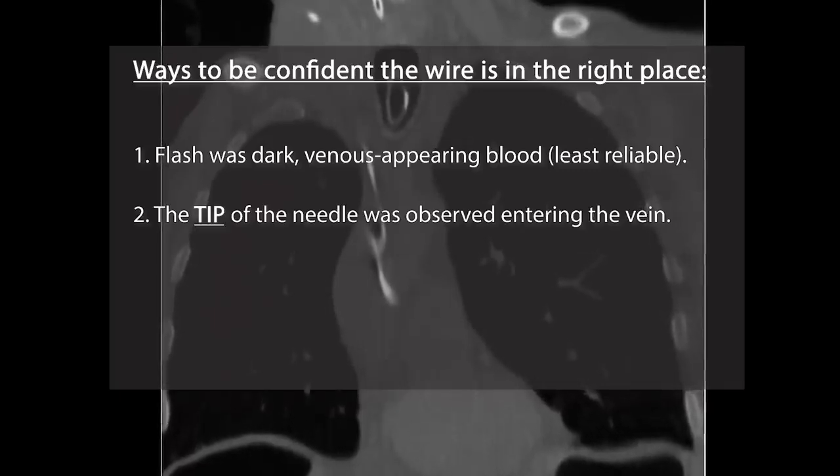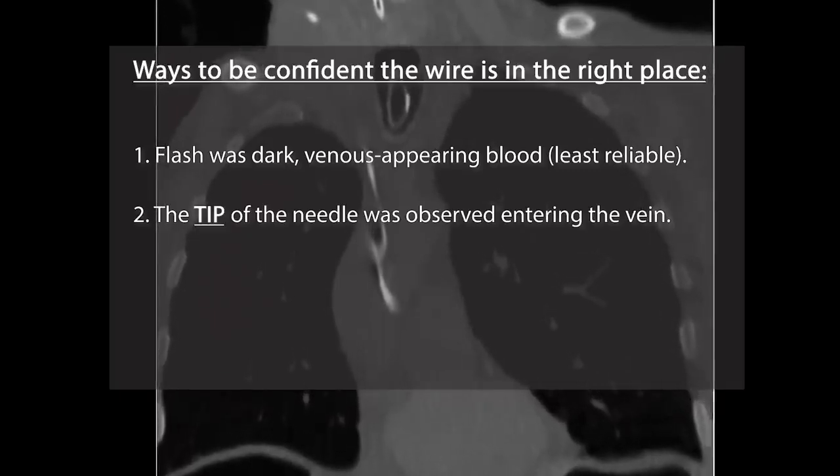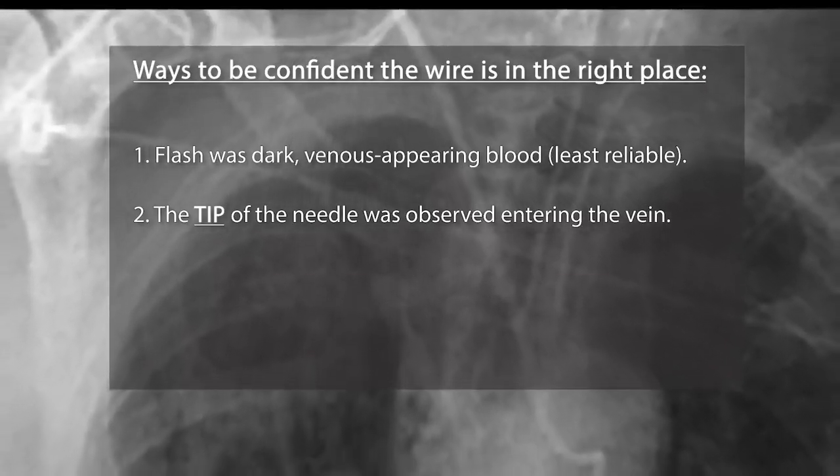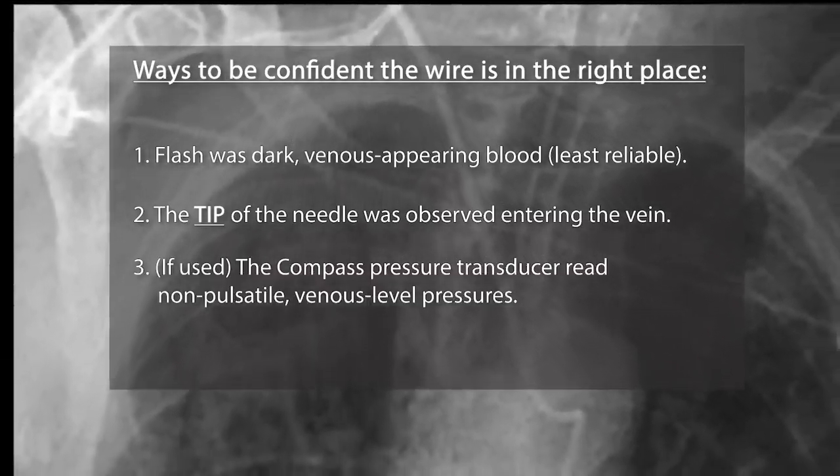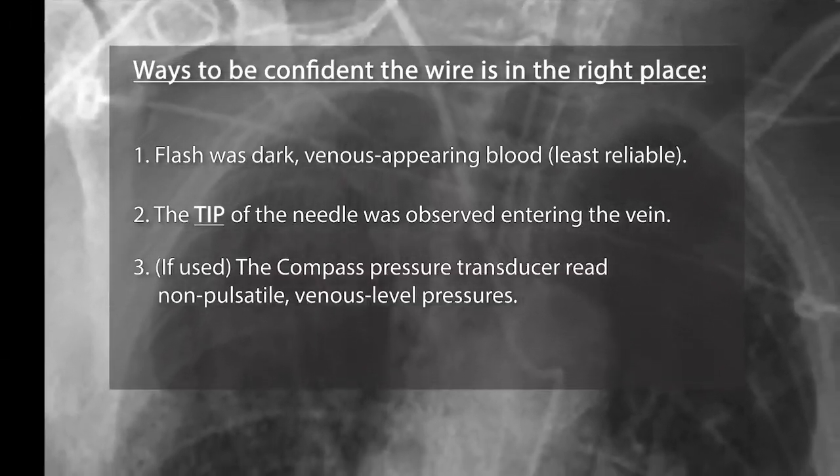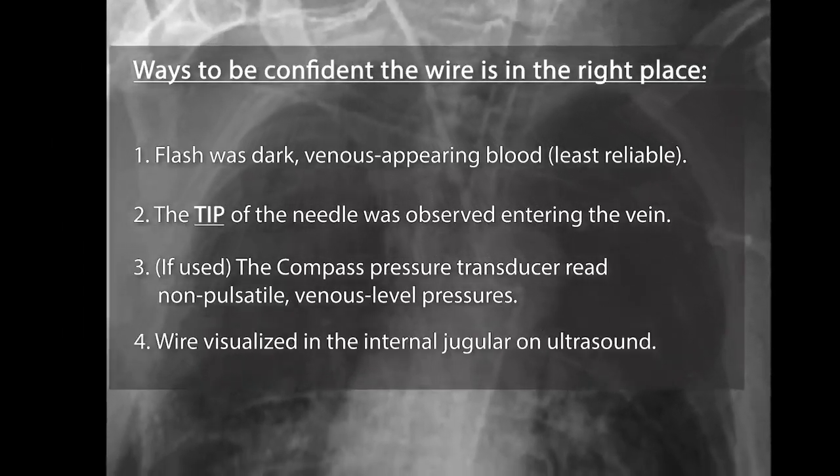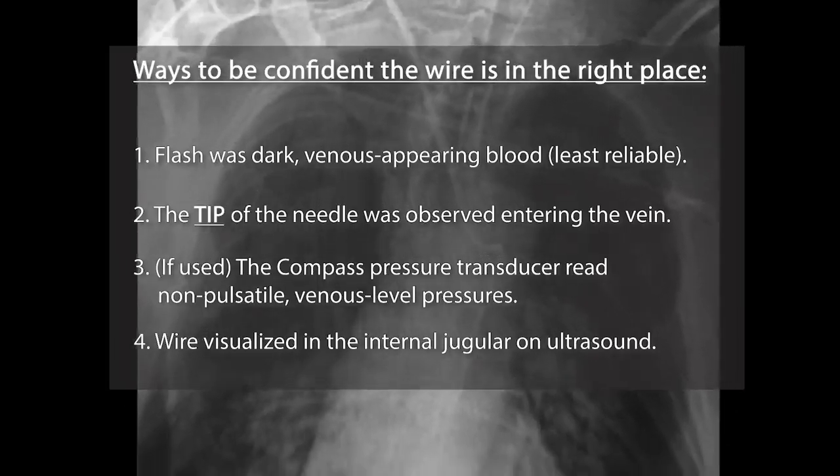Two, under ultrasound, I saw the tip of the needle entering the vein and not the artery. See the ultrasound guided access video for more info. Three, the compass pressure transducer, if I'm using it, was reading a non-pulsatile venous level pressure. And four, I see the wire traveling down the jugular on ultrasound.